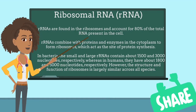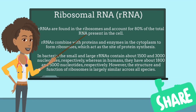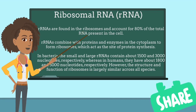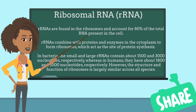Ribosomal RNA, rRNA, is found in the ribosomes and accounts for 80% of the total RNA present in the cell. Ribosomes are composed of a large subunit called the 50S and a small subunit called the 30S, each made up of its own specific RNA molecules. rRNAs combine with proteins and enzymes in the cytoplasm to form ribosomes, which act as the site of protein synthesis. These complex structures travel along the mRNA molecule during translation and facilitate the assembly of amino acids to form a polypeptide chain.